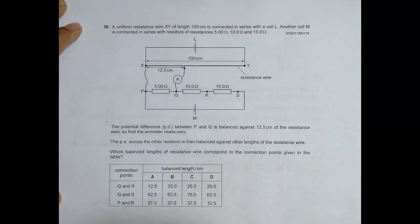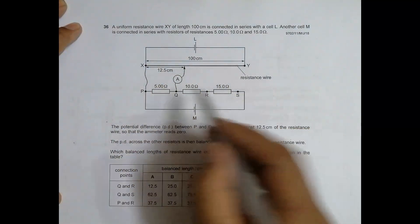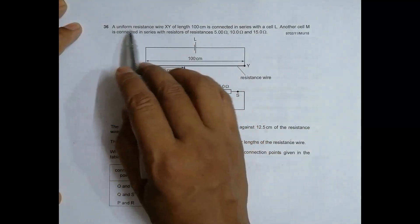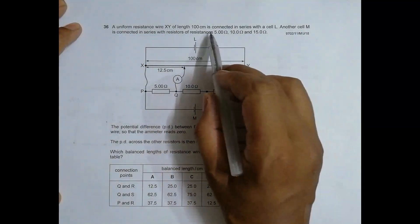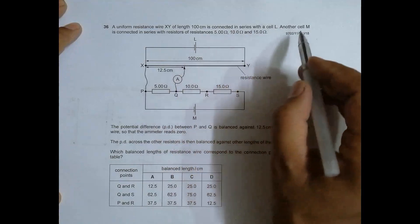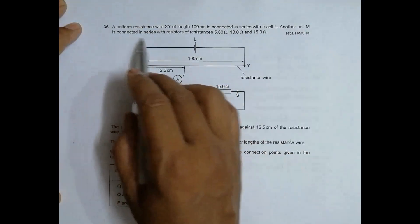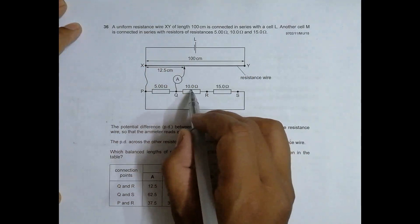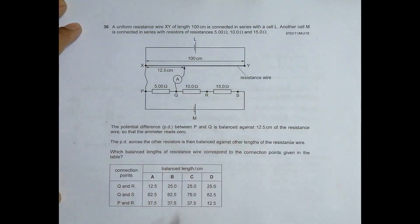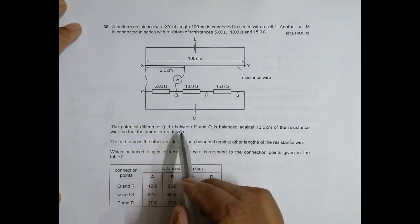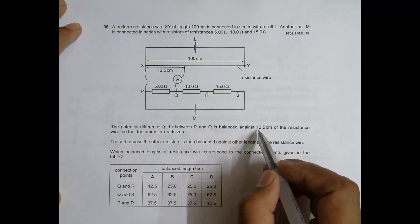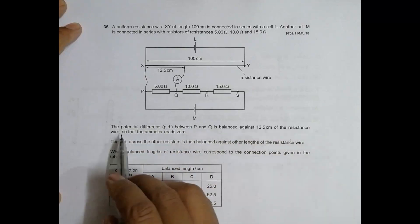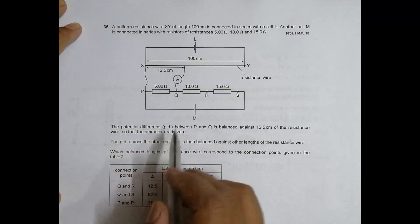It's number 36 and concerns the topic of current electricity. A uniform resistance wire XY of length 100 centimeters is connected in series with a cell L. Another cell M is connected in series with resistors of resistances 5, 10, and 15 ohm. The PD between P and Q is balanced against 12.5 centimeters of the resistance wire.